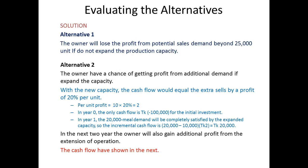With the new capacity, the cash flow would equal the extra sales multiplied by a profit margin of 20% per unit.